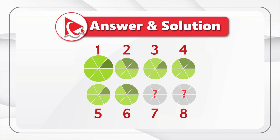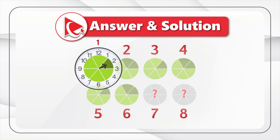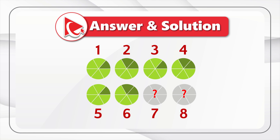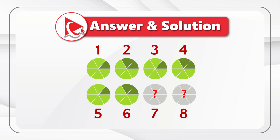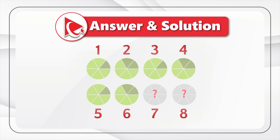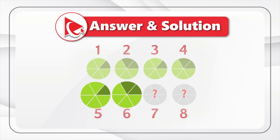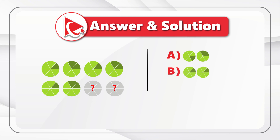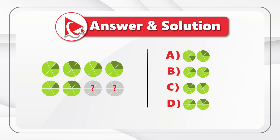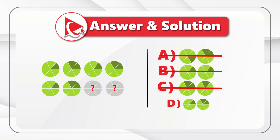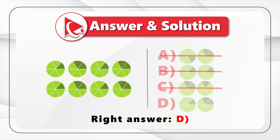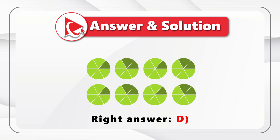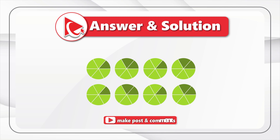If you look closely at circle one, there is a dark section at the two o'clock position. Circle two has two dark sections — one at noon and another at two o'clock. A similar pattern appears in circles three and four, and circles five and six also mimic the same pattern. Looking at the possible answers, choices A, B, and C do not meet this pattern. The only right answer that fits the pattern is choice D.